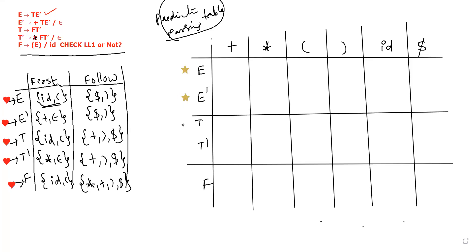Okay, the left-hand side values are: E, T, T-dash, F. So the values are on the left-hand side. The top value is the terminal symbols — these are the capital letters.